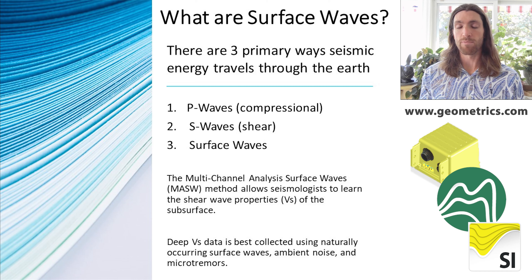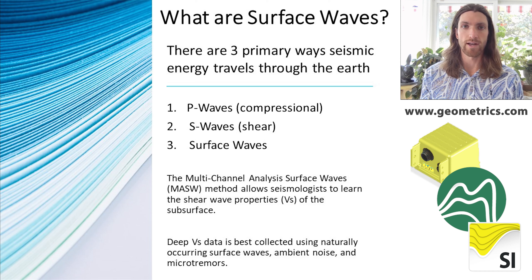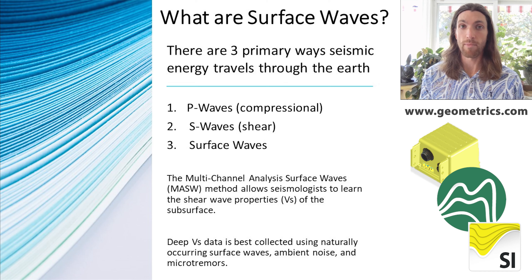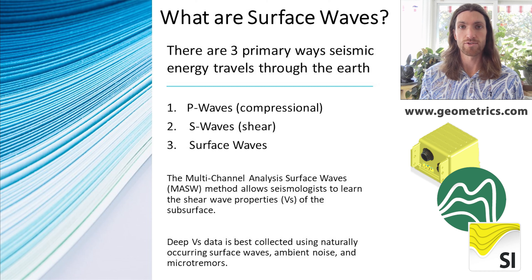With passive seismic, you're really measuring surface waves. Surface waves make up about 70% of all the seismic energy released during an impact, such as swinging a sledgehammer on the ground. The ambient microtremors propagating through the Earth everywhere at once are primarily surface waves — they're the highest amplitude waves. So the surface wave will outgain the shear wave. We use surface waves for passive seismic and then convert them to shear waves using known equations.